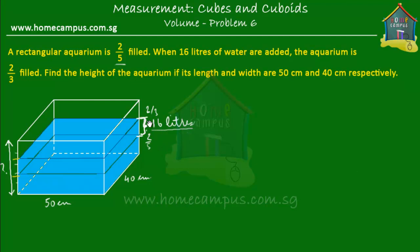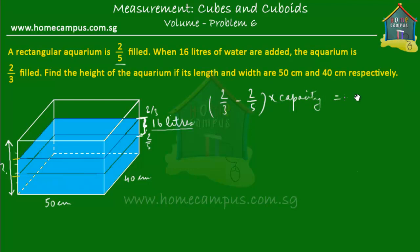So: two-thirds minus two-fifths of the capacity of the rectangular aquarium is equal to 16 liters. Let's write that down: (2/3 − 2/5) of the capacity = 16 liters.